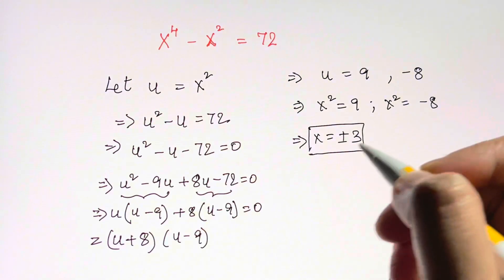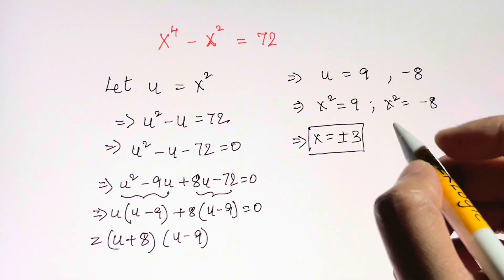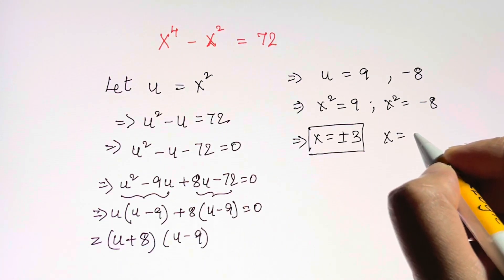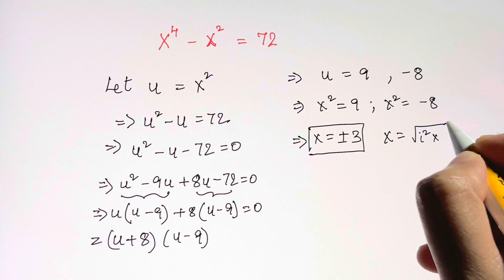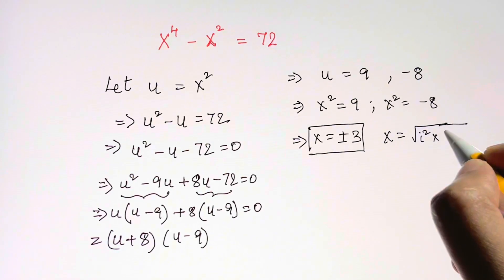For here, you can just solve it. x is equal to square root of negative 8. We can write it as i squared times 8, which can be written as 4 times 2.